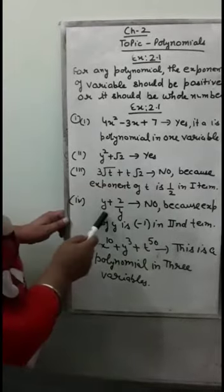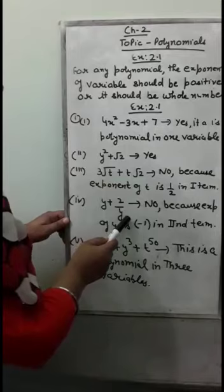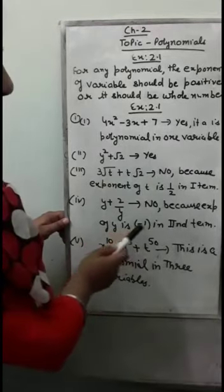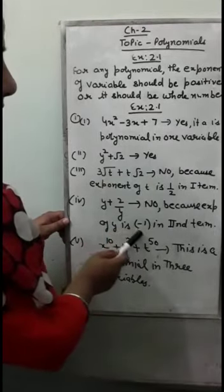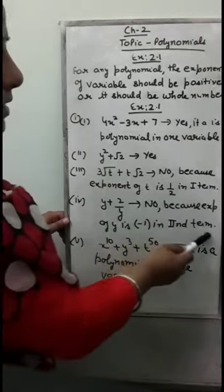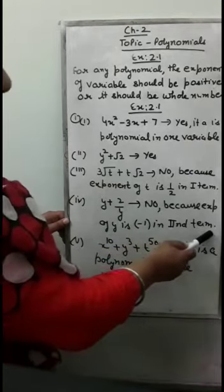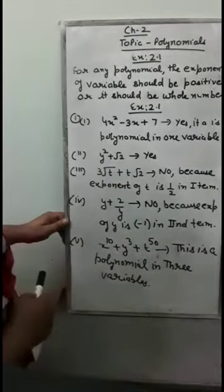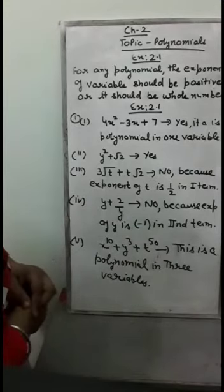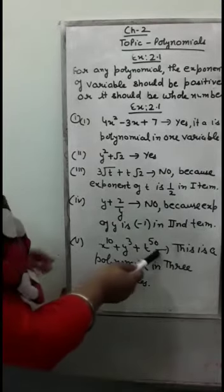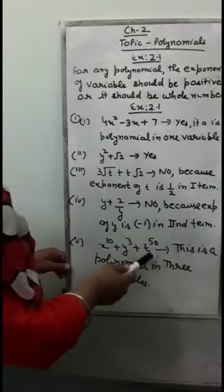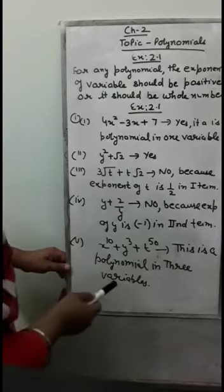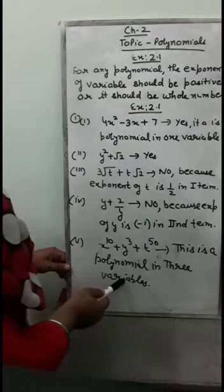In the fourth part, the statement is y plus 2 upon y. This is also no because the exponent of y in the second term is minus 1 — since 2 upon y means 2 times y raised to power minus 1. In the fifth part, the answer is yes, it is a polynomial, but it is not in one variable — it is in three variables.